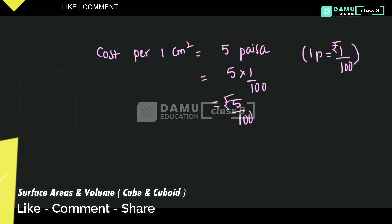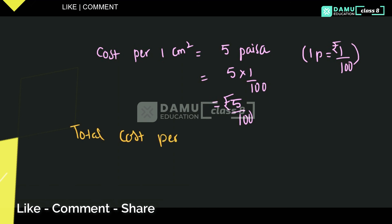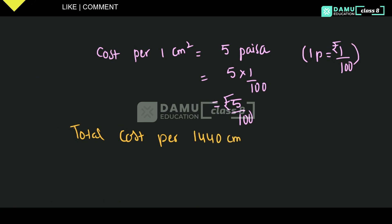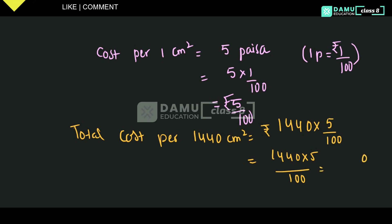We have 1440 square centimeters. So total cost for 1440 square centimeters will be 1440 into 5 by 100 rupees. Calculating: 1440 multiplied by 5 equals 7200, then 7200 divided by 100 — the two zeros cancel — so the total cost will be 72 rupees.